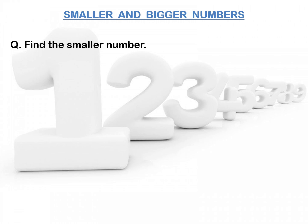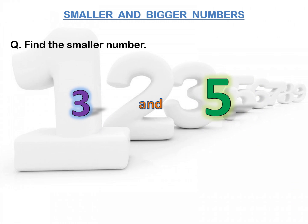Now, look at the question. In this question, you have to find out the smaller number. The numbers are 3 and 5. First, we have to count the number of digits of each number. Our first number is 3 — it has only one digit, so it is a one-digit number. And the second number is 5 — this is also a one-digit number.